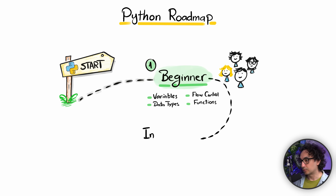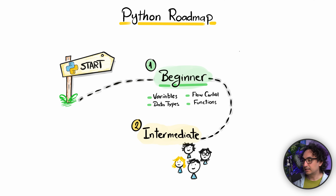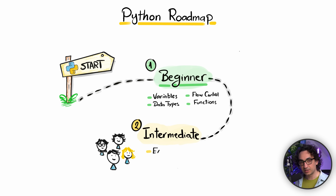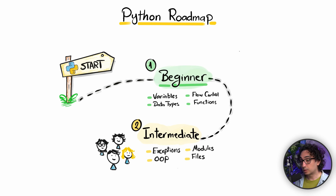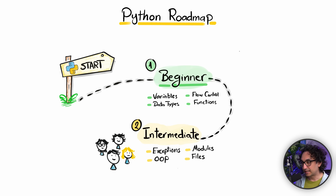After the foundation, everyone moves to the intermediate level, where things level up. You start learning how to handle errors and exceptions, how to structure your code using OOP (object-oriented programming), how to split your projects into modules, and how to work with files, among many other things. At this phase you start feeling how your code is getting more professional — more like a real developer.